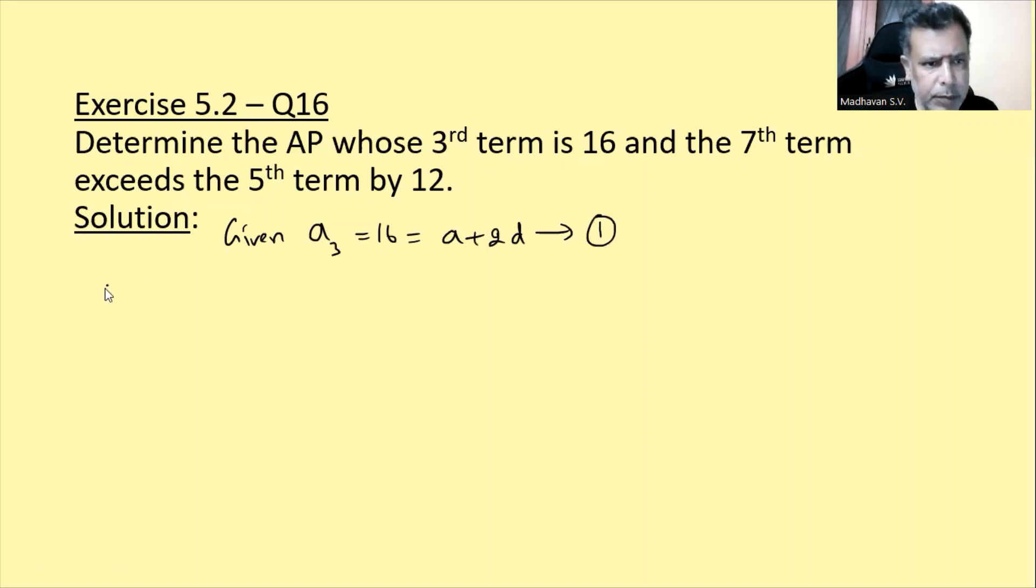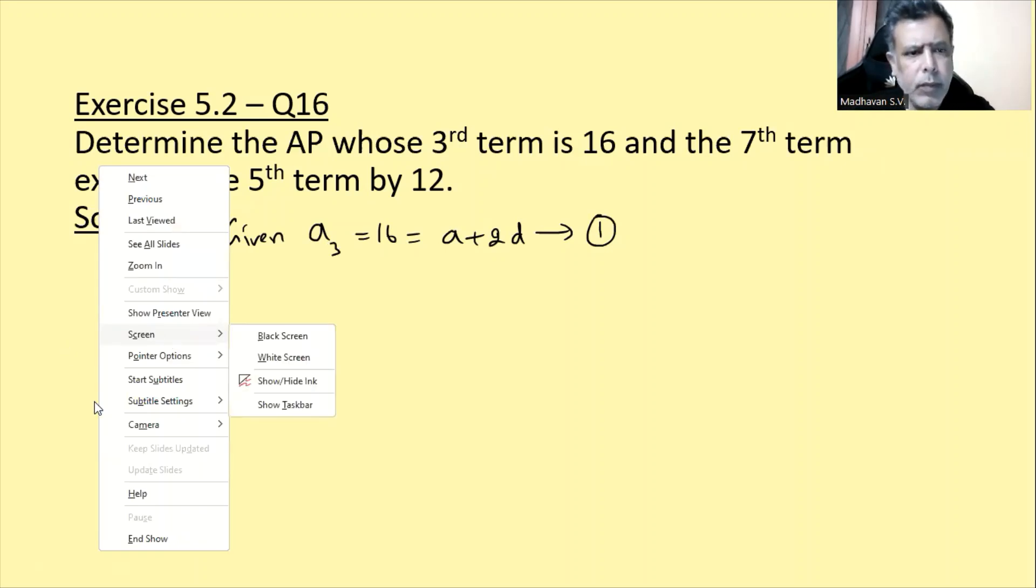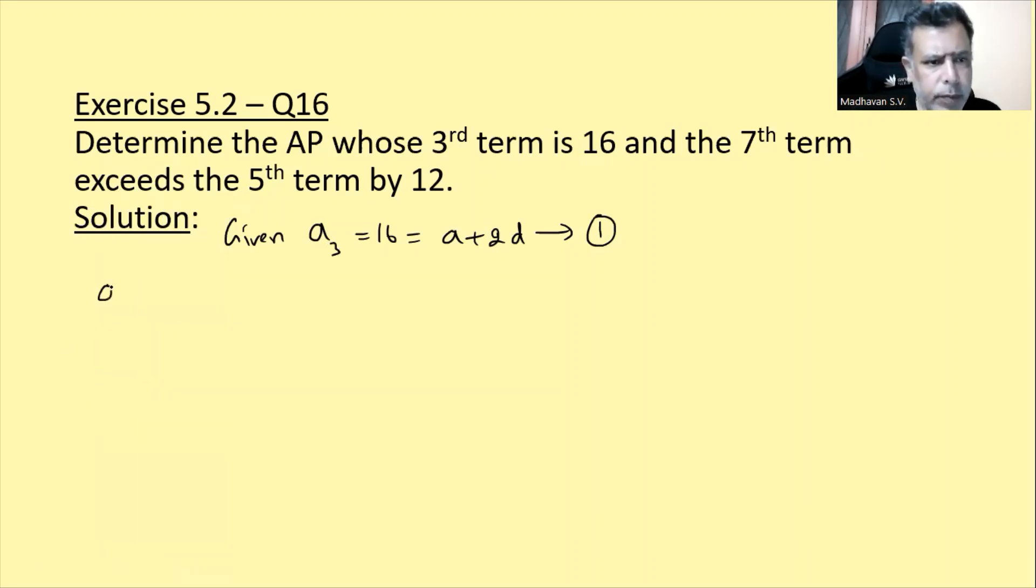Our 7th term matlab, 7th term A7 exceeds the 5th term matlab A5 by 12. Isko wapas liknye vakt a plus 6d minus a plus 4d is equal to 12. A cancel ho jata hai. Tho humi nikalta hai 2d equal to 12. Iska matlab d jo hai 6 nikalta hai.